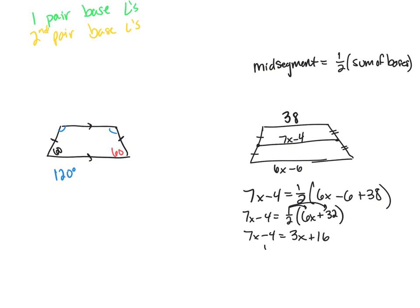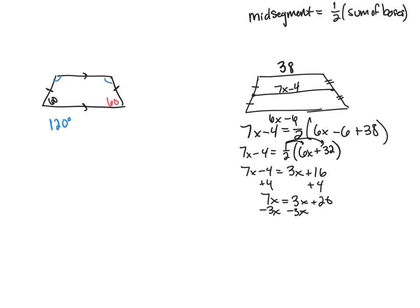And so now I just work to solve. So plus 4, so 7x equals 3x plus 20, subtract 3x, subtract 3x, and so I'd get 4x equals 20 divided by 4, and x is equal to 5.